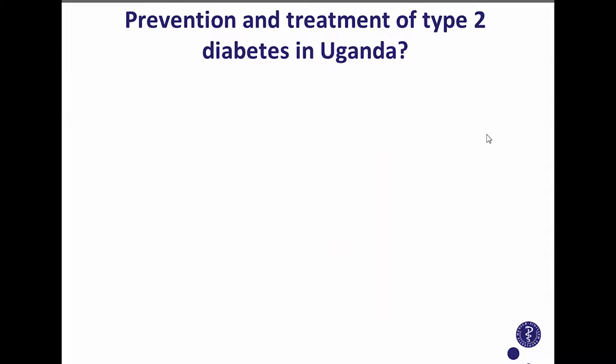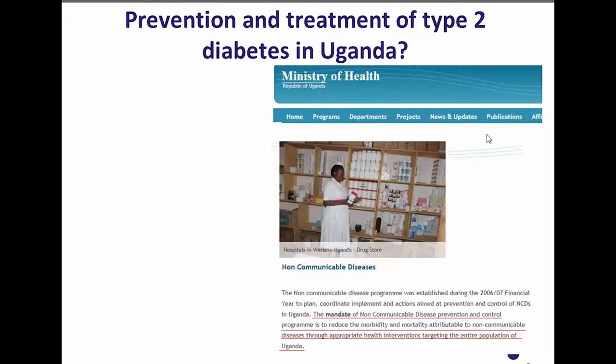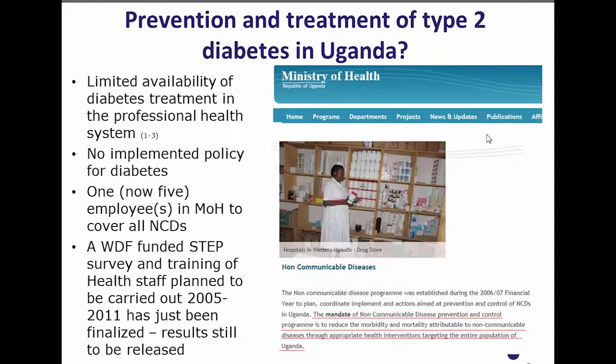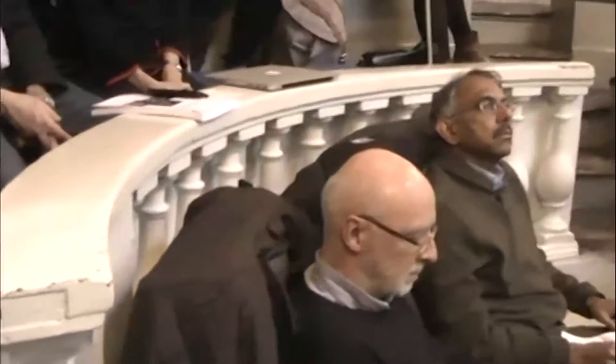Regarding prevention and treatment of type 2 diabetes in Uganda: in 2006-2007, the Ministry of Health launched a section for non-communicable diseases with the mandate to reduce morbidity and mortality. When it comes to diabetes, there is limited availability of treatment at least in the professional health system, no implemented policy for prevention or management, and very little foreign aid supporting patients. Living with diabetes requires daily management — you need to control your blood levels or you risk serious complications.